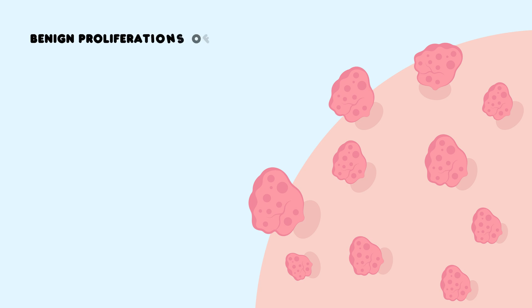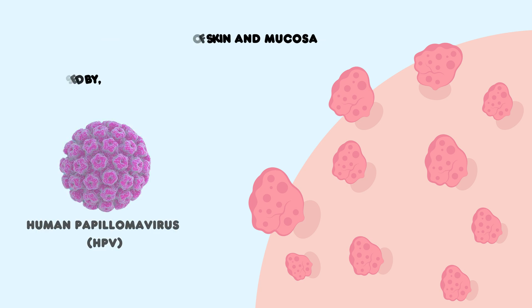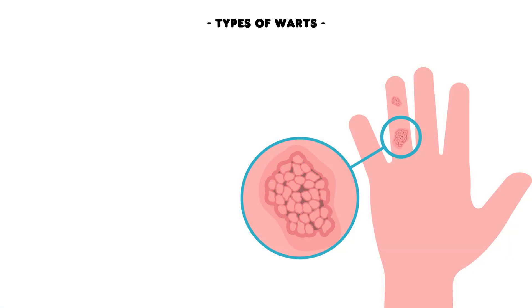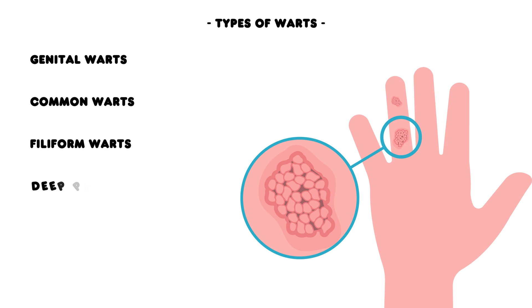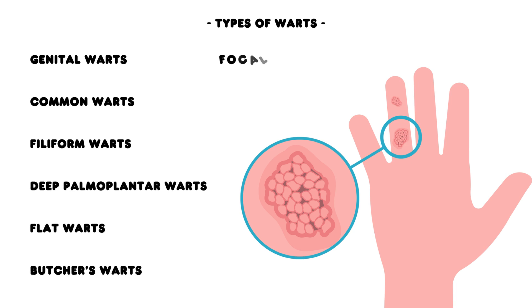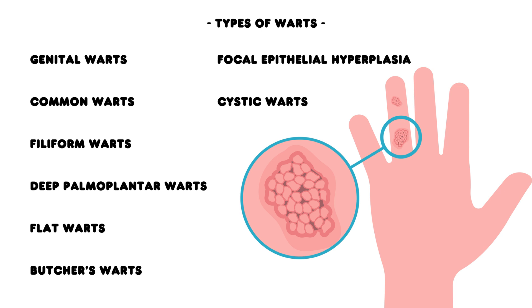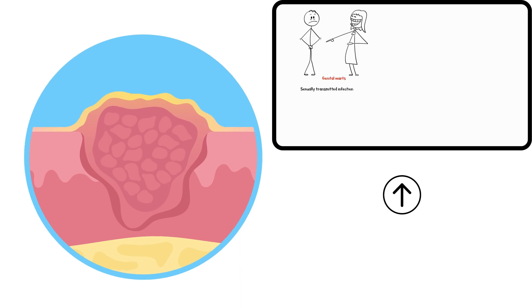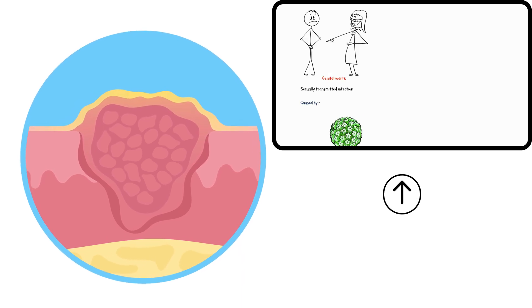Warts are benign proliferations of skin and mucosa caused by the human papillomavirus. There are several different types of warts, including genital warts, common warts, filiform warts, deep palmoplantar warts, flat warts, butcher's warts, focal epithelial hyperplasia, and cystic warts. In this video, I will discuss non-genital types of warts in detail. If you are looking for information regarding genital warts, please watch my previous video on the topic — the link is in the description below.